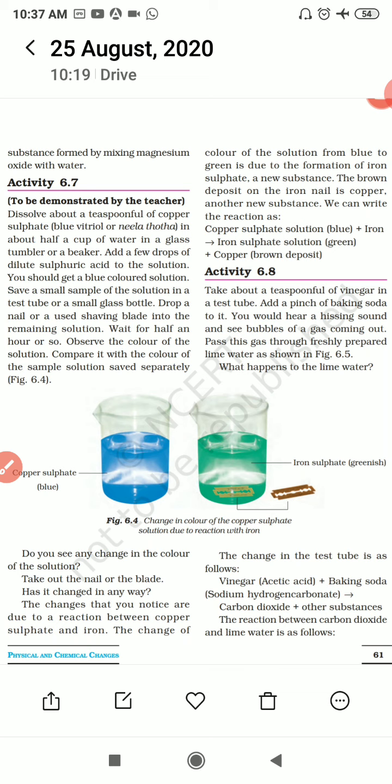You read activity 6.7 and 6.8. I will explain you. The change in which one or more new substances is called a chemical change, that I have told you. Examples are given in 6.7 and 6.8 activities. Read it once, I will explain you and then we will go ahead.